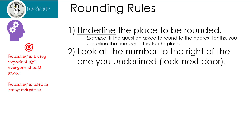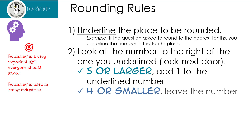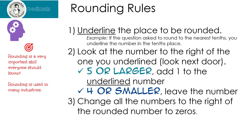The next thing we do is look at the number to the right of the one you just underlined — basically, we look next door. If that number is five or larger, we add one to the underlined number. If the number next door is four or smaller, we leave the underlined number alone. Finally, we change all the numbers to the right of the underlined number to zeros, or we just take them all off.